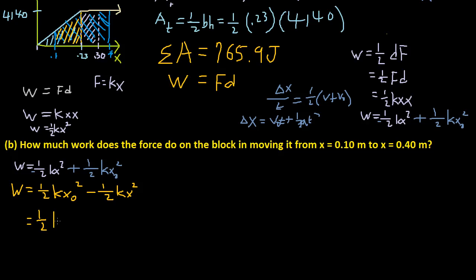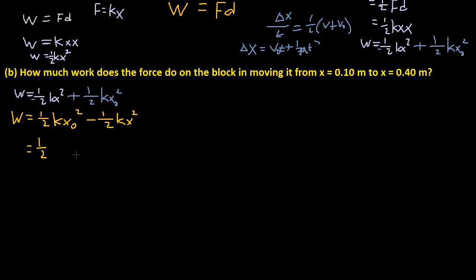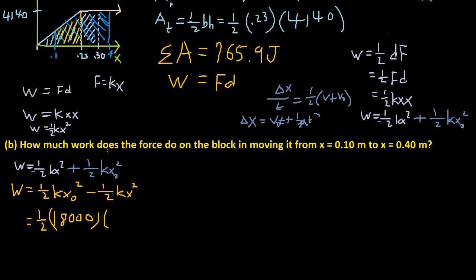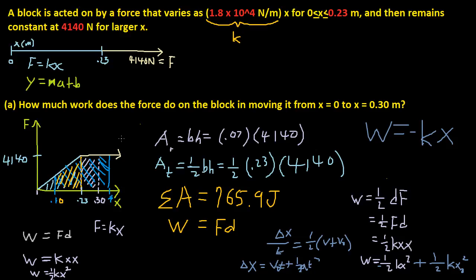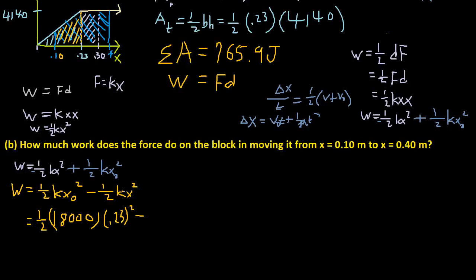So 1.5k, so the work for that part is 1.5k, which is this, which is also equal to 18,000 for me, times x0 squared. And since x0 squared is always the bigger one, this is going to be 0.23. Because it wouldn't make sense if work was negative, because then the thing would go the other direction.